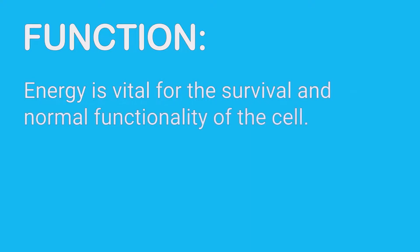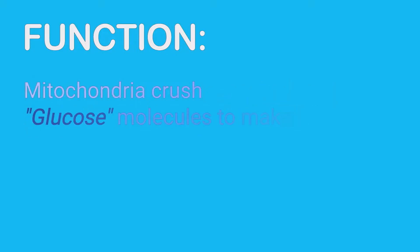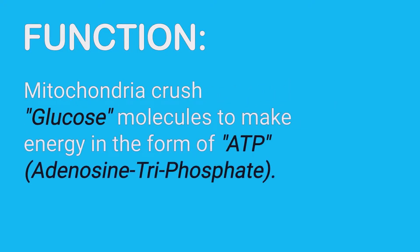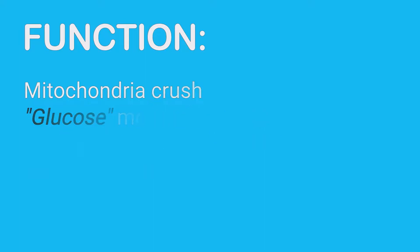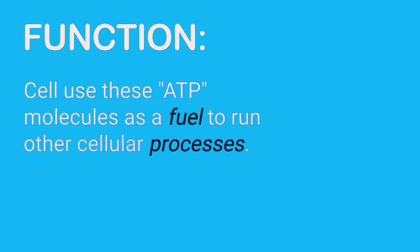Energy is vital for the survival and normal functionality of cell. Mitochondria crush glucose molecules to make energy in the form of ATP. Cell use these ATP molecules as a fuel to run other cellular processes.